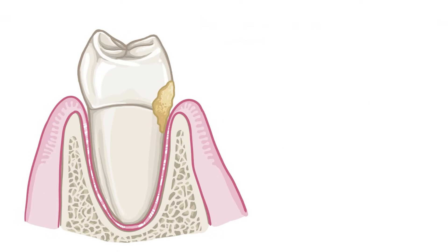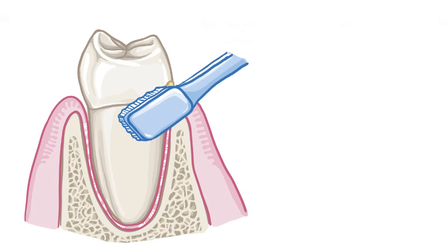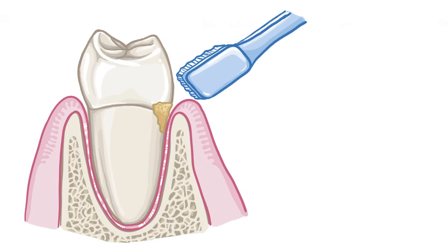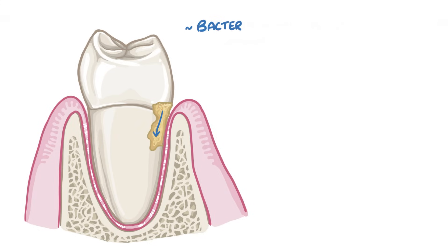Some tooth surfaces, like the portion of the tooth just outside the gingiva, are hard to brush dental plaque away from. If dental plaque above the gingiva keeps building, the bacteria within that biofilm can invade beneath the gingiva, where it becomes really difficult to reach with brushing.